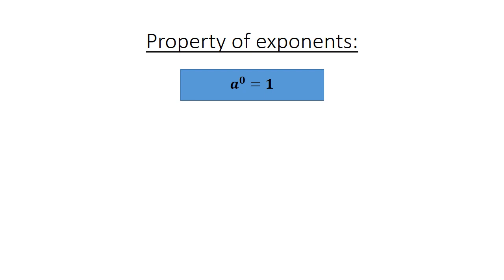A to the power of 0 equals 1. In brackets: a to the power of 3, close brackets, to the power of 0 also equals 1.